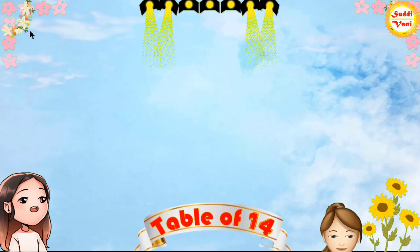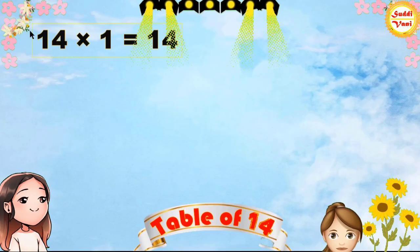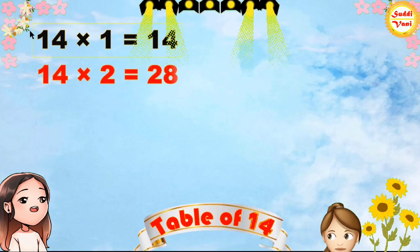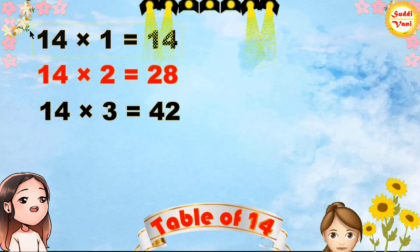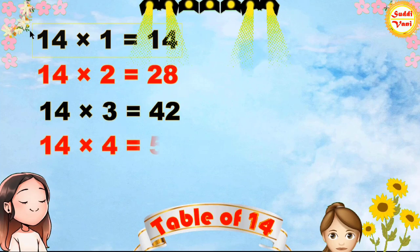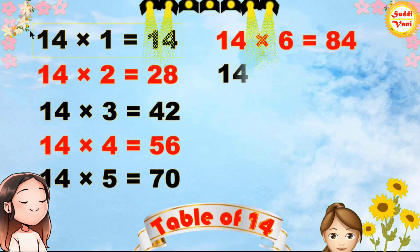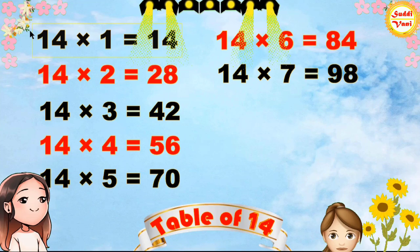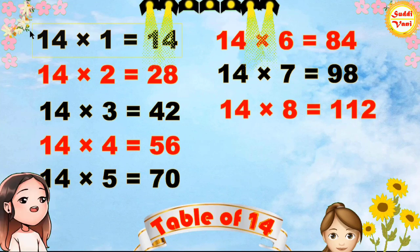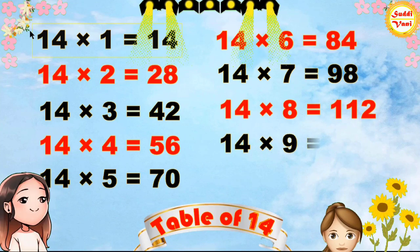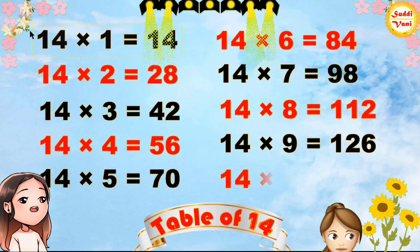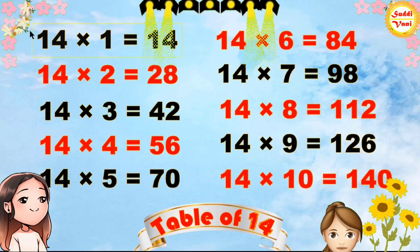Once again: 14×1=14, 14×2=28, 14×3=42, 14×4=56, 14×5=70, 14×6=84, 14×7=98, 14×8=112, 14×9=126, 14×10=140.